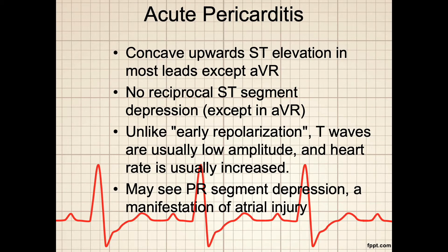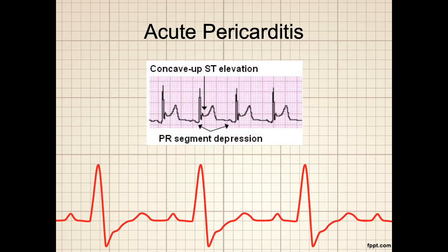ST segment changes may also reveal acute pericarditis. With acute pericarditis, the ST segment is concave and deflects upward in most leads except AVR. There is no reciprocal ST segment depression, except perhaps in AVR. Unlike early repolarization, the T waves are usually of low amplitude and the heart rate is usually increased. You may see a PR segment depression, which is a manifestation of atrial injury from the acute pericarditis — those changes are reflected in the concave upward-facing ST elevation along with PR segment depression, which is the hallmark of acute pericarditis.